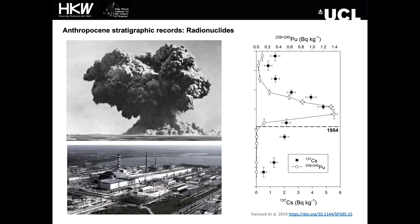Although testing and detonations took place from 1945 onwards, it was only from 1952 that thermonuclear weapons began to be extensively tested above ground and in the atmosphere, leading to a truly global dispersion and deposition of isotopes. With approaching international treaties to limit nuclear weapons tests, nuclear nations accelerated their testing programs, leading to a large increase from the early 1950s resulting in a peak in atmospheric concentrations occurring in 1963.